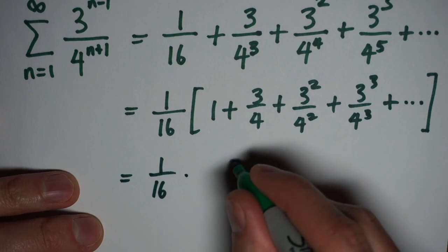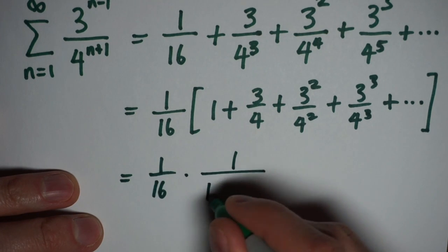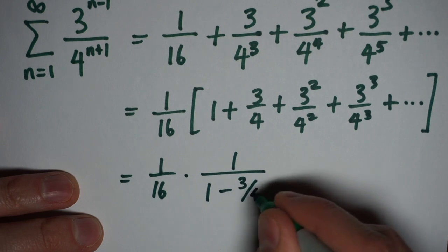So I'm working at 1 16th. My ratio is 3 quarters, so it's 1 over 1 minus 3 quarters as my total sum.